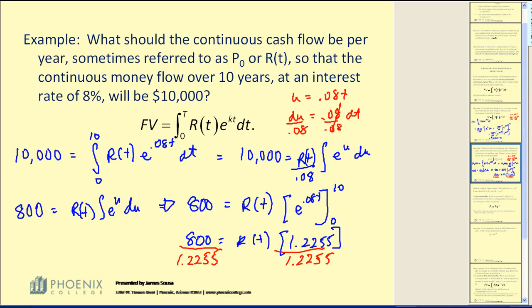And R of T is equal to $652.85. Which means if we deposit $652.85 into an account every year over ten years, and it earns eight percent continuous interest, we will end up with $10,000.